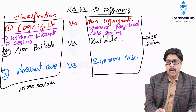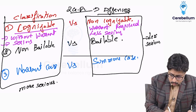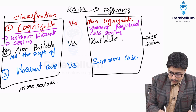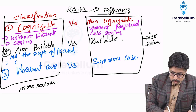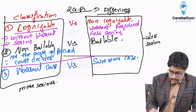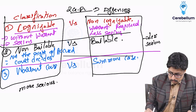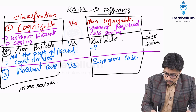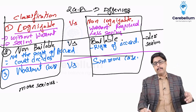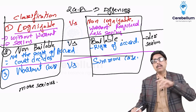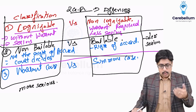In a non-bailable offense, it is not the right of the accused to get bail — the court decides on a case-to-case basis. Whereas in a bailable offense, it is the right of the accused to get bail. So obviously the bailable offense will be the less serious offense, and non-bailable will be the more serious offense.